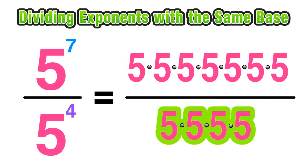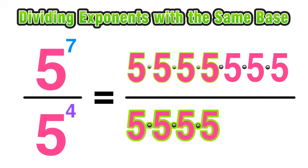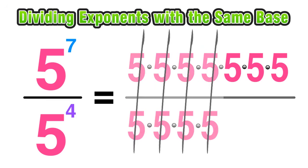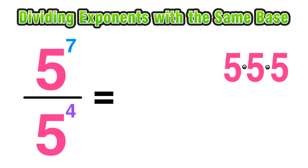Now by applying our understanding of fractions we can line up the numerator with the denominator and see that we have a match of four fives on the top and the bottom that can be canceled out since any number divided by itself is just one.